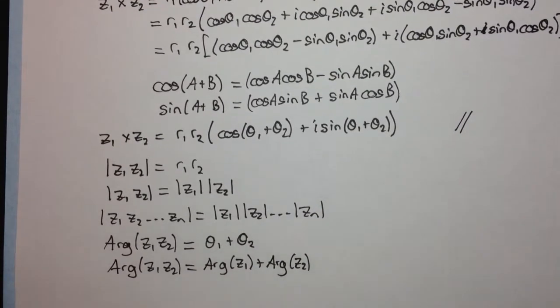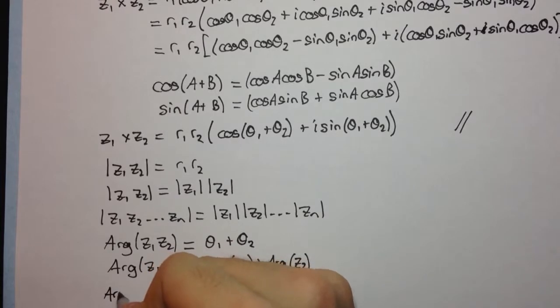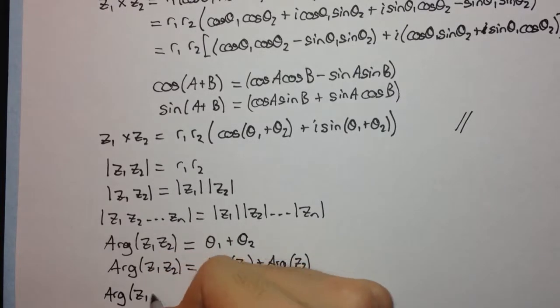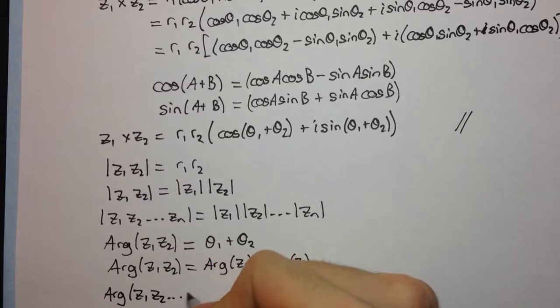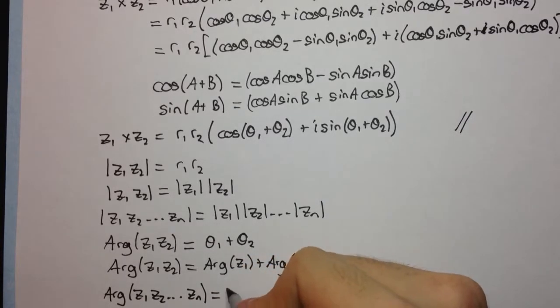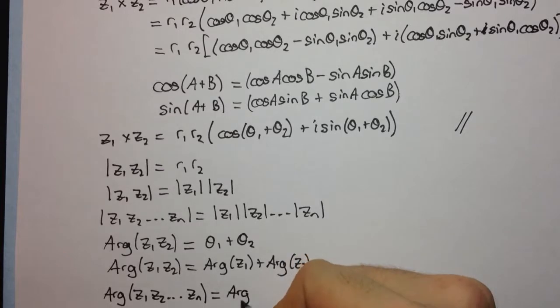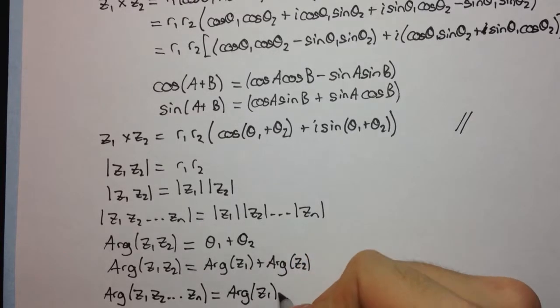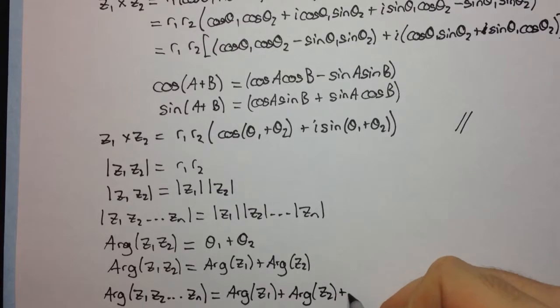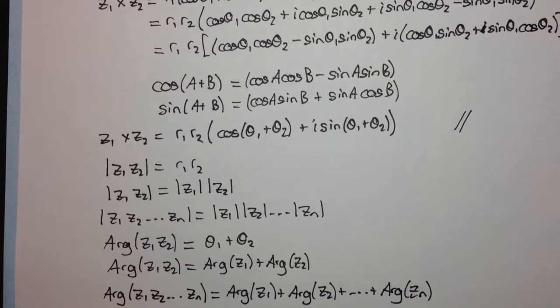And once again, we can generalize this. We're going to have arg of z1 z2 all the way up to n complex numbers zn. It's going to be the sum of the individual arguments. And once again, you can prove this by induction, and I recommend you try it.